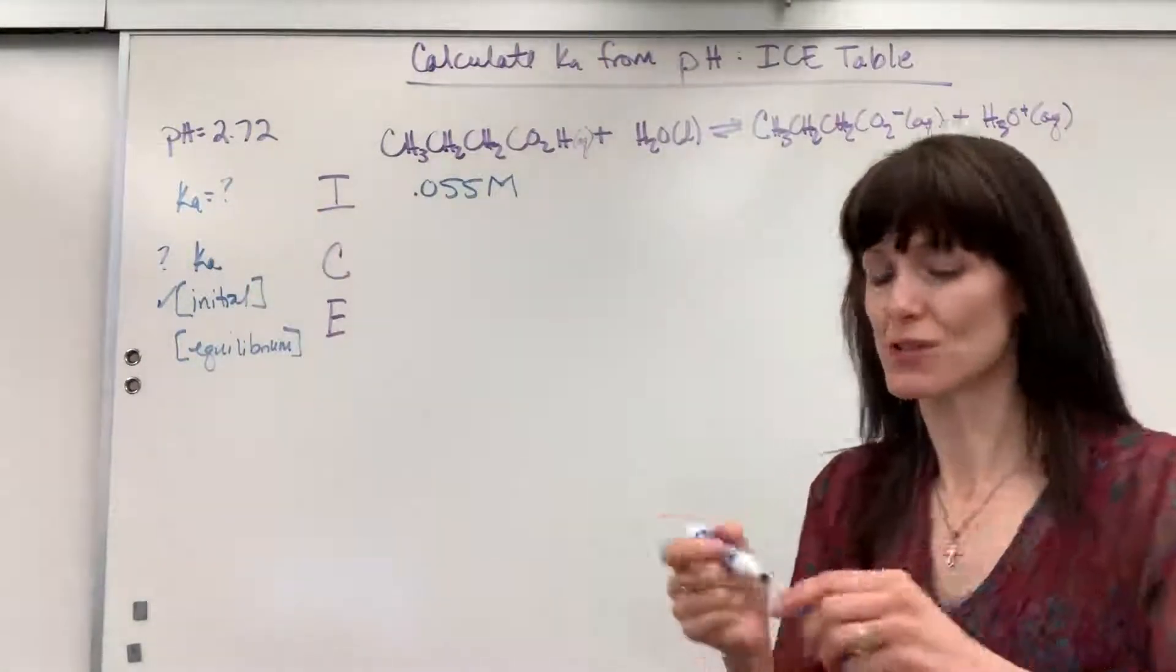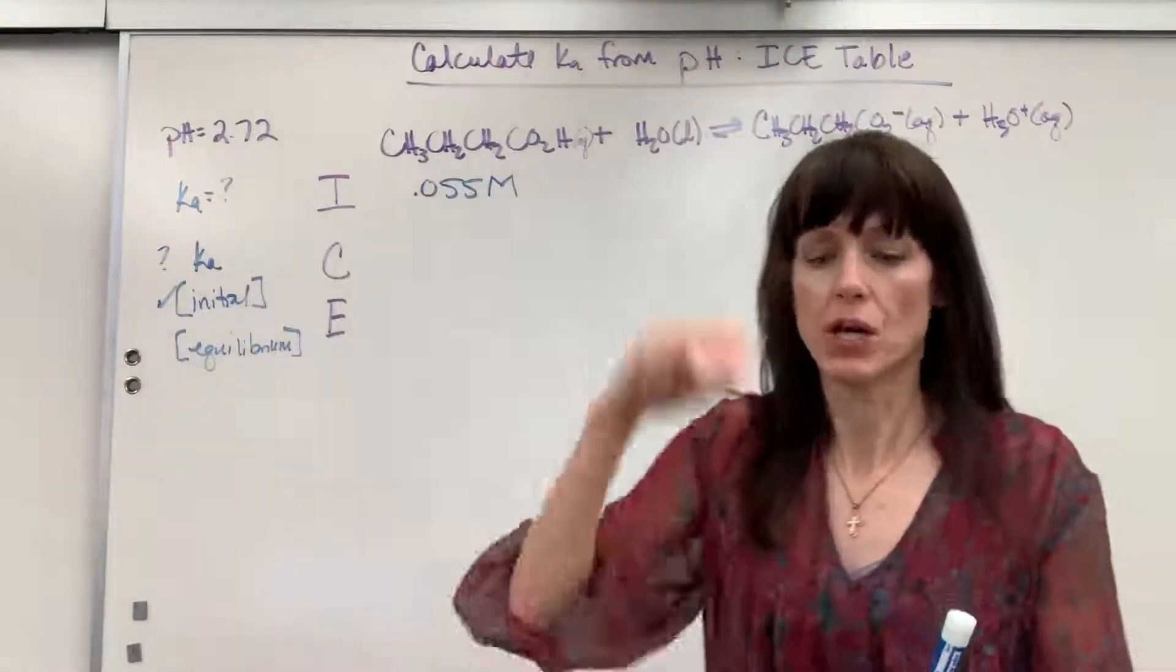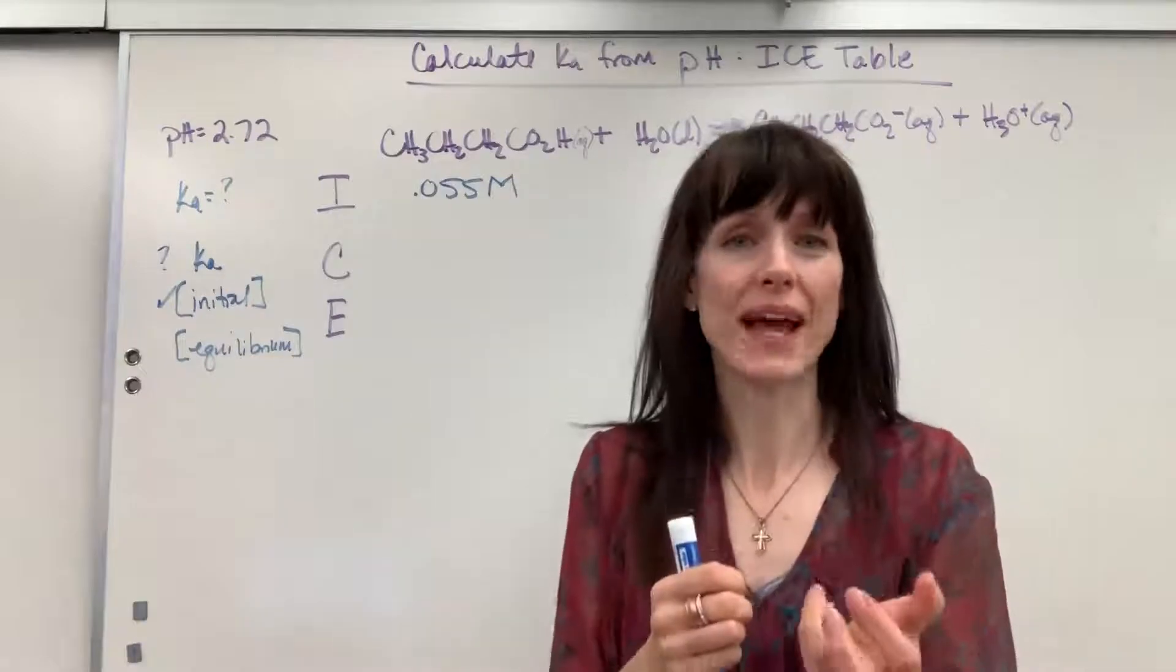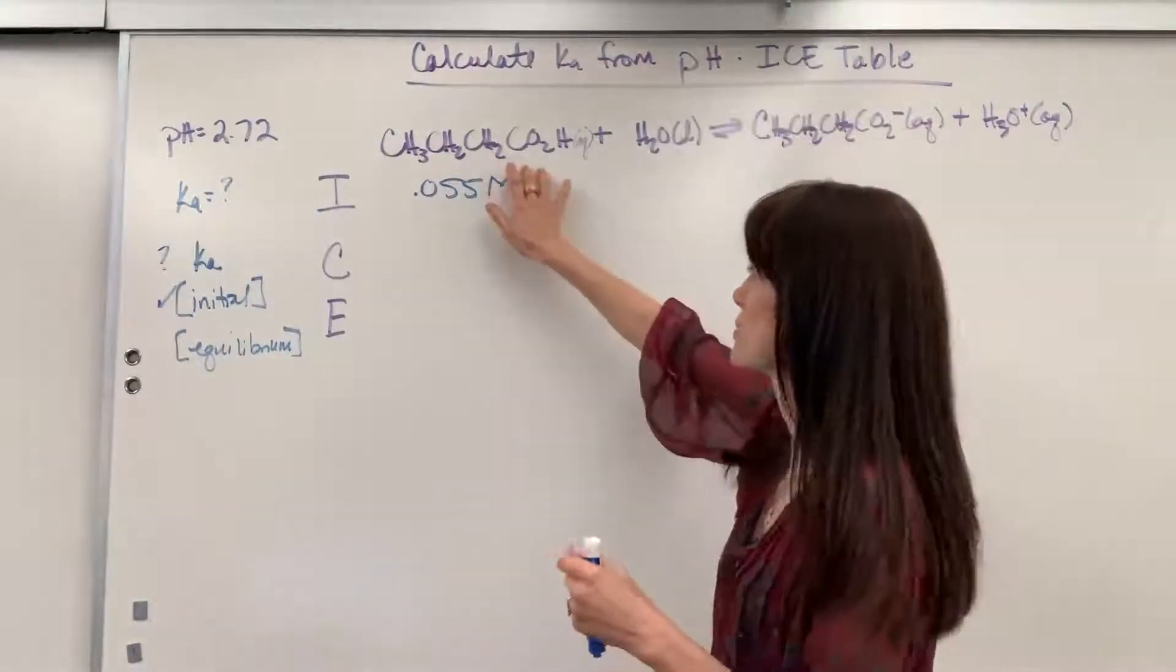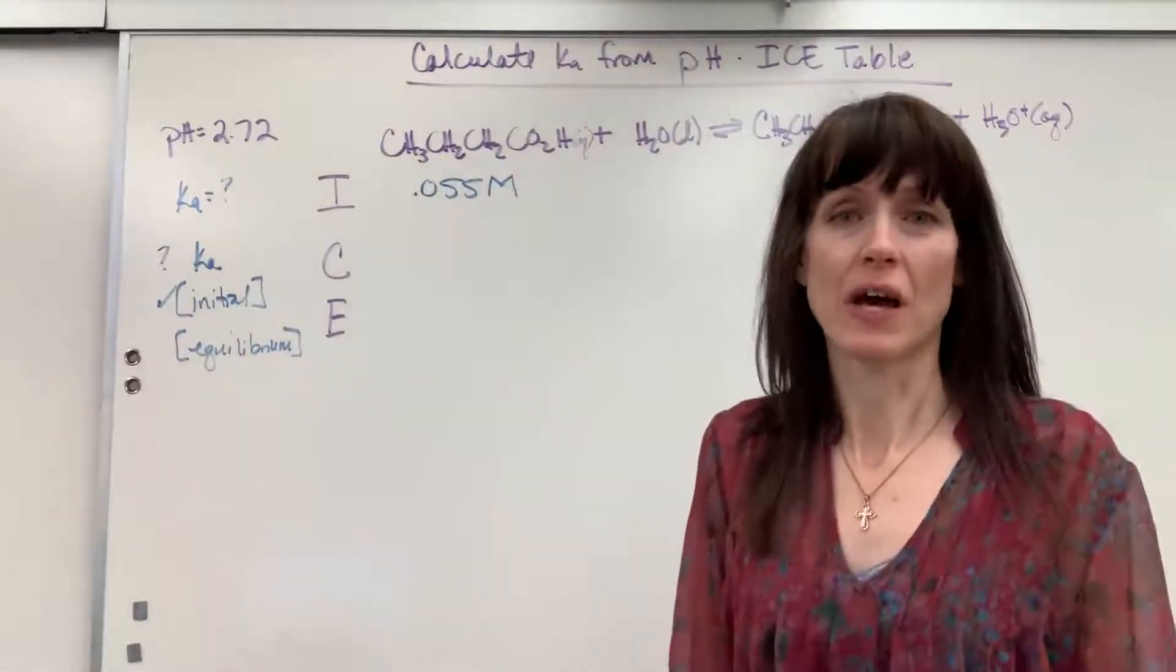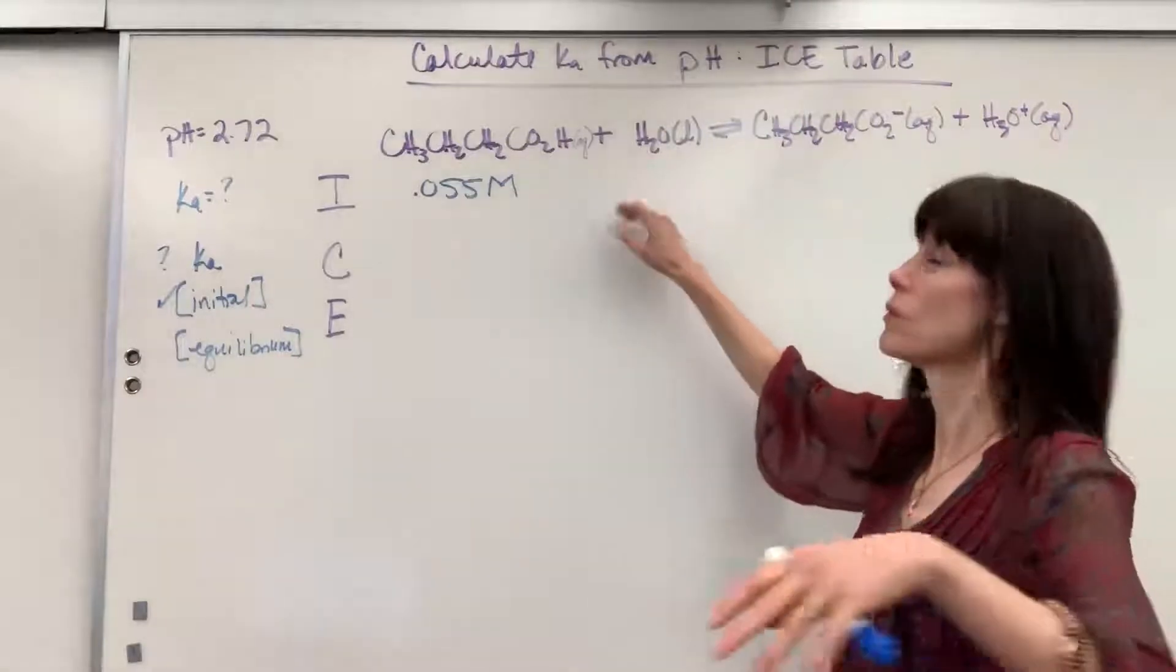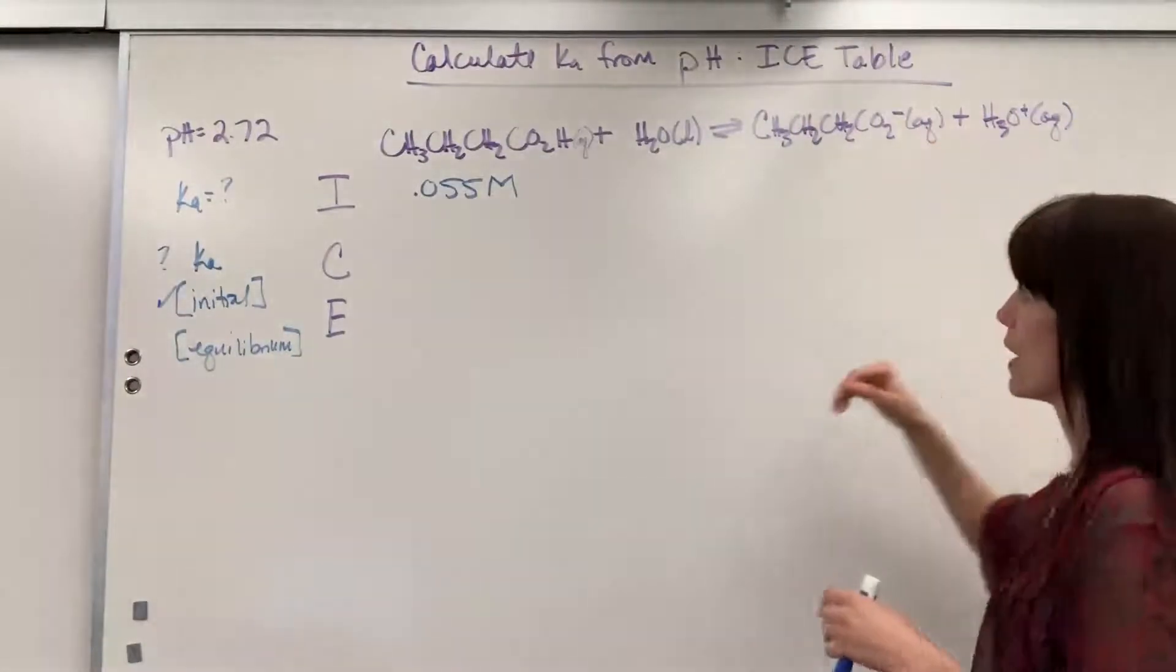So I want you to think this through with me. We're going to have this butanoic acid. Drop it into water. It reacts. But remember, it's a weak acid. So it only partially ionizes. Only some of this reacts. If I had to guess, maybe 5% of that butanoic acid is going to react.